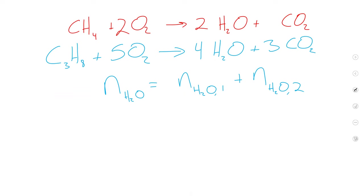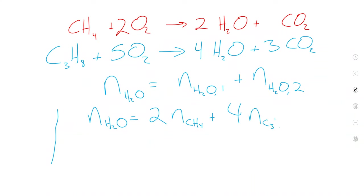We can rewrite those in terms of moles of methane and propane. Total moles of water is going to be two times our moles of methane we started with, plus four times our moles of propane. It's a bit of a stretch to see that until you've seen this trick once — like a lot of algebra tricks from math class. Once you've seen it, you can replicate it. If you'd never seen this before, it was a really hard problem. Three of the four equations you needed were kind of hard to get to.